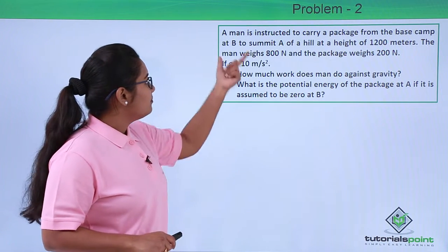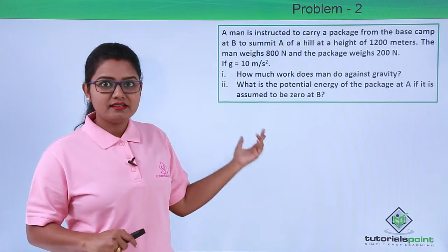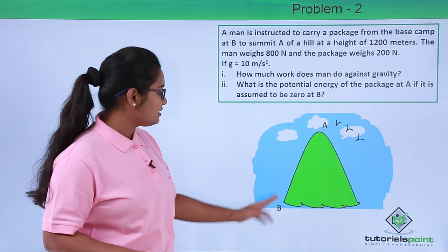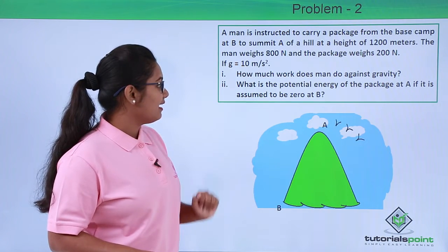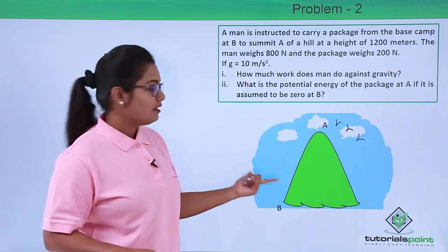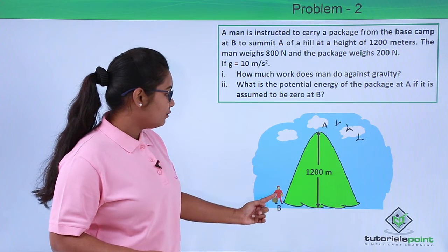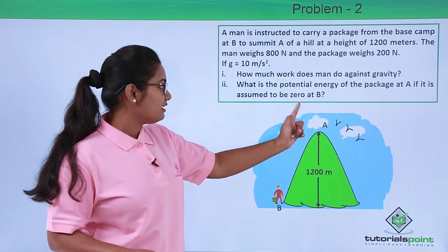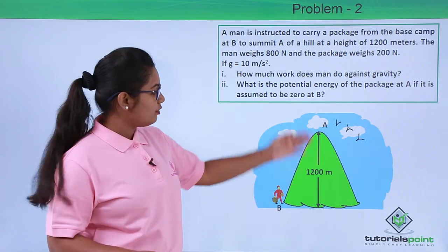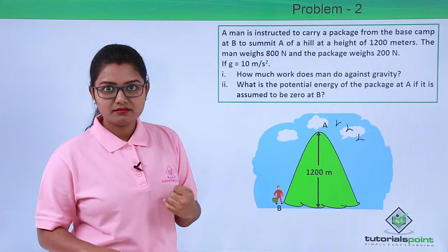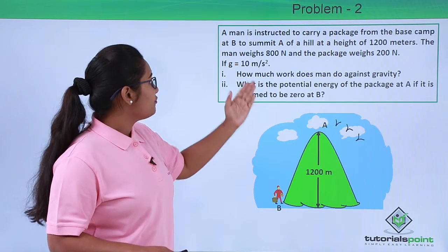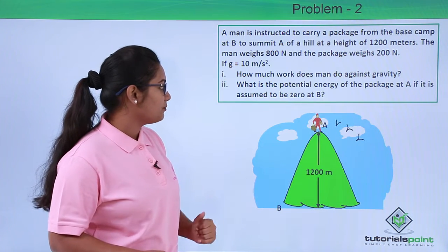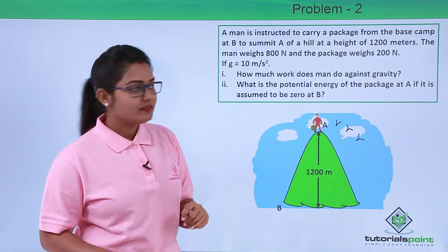Before going to the solution, let us visualize the conditions of this problem. Here we have a hill with the base camp at B at the bottom and the summit A at the top of the hill. There is a man with a package who has to travel from point B to point A by climbing up the hill. The height of this hill is given to be 1200 meters. We need to find out how much work the man does when he moves from point B to point A against the force of gravity.